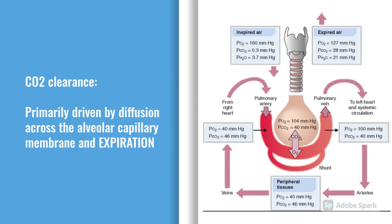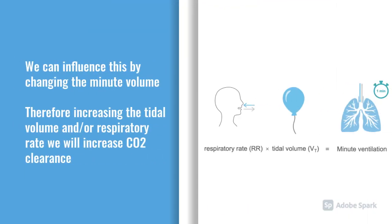In terms of carbon dioxide, CO2 clearance is driven by diffusion across the alveolar membrane, but it's largely expiration. If you're worried about a CO2 problem, you need to think about expiration and how you can increase that. The two ways we can do that are by changing the minute volume — which is respiratory rate times tidal volume, typically around six litres a minute for most adults, with a tidal breath of about 500 mils and a respiratory rate of 12 to 20. So two ways to increase CO2 clearance: increasing your respiratory rate or increasing the tidal volume, mainly by pressure.